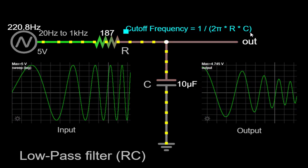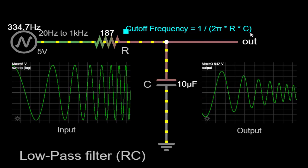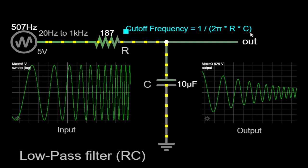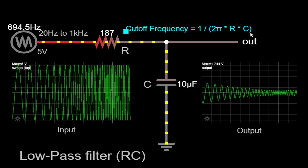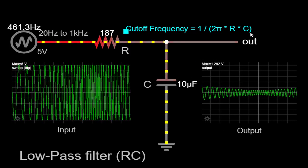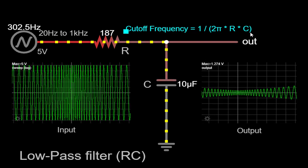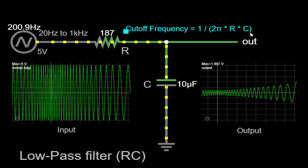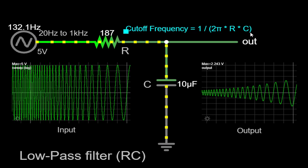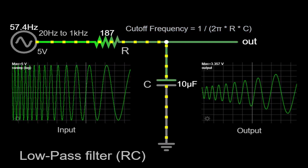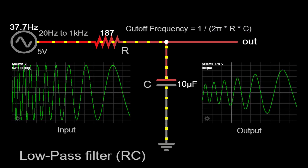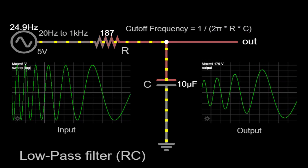In conclusion, the low-pass filter implemented using an RC circuit demonstrates the ability to allow low-frequency signals to pass through while attenuating higher frequency signals. By utilizing the interaction between the resistor and capacitor, the circuit effectively filters out unwanted frequencies. This property makes the RC circuit a valuable tool in various applications such as audio processing, signal conditioning, and communications.